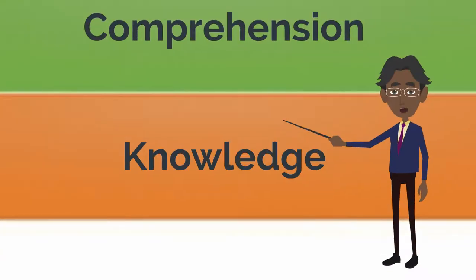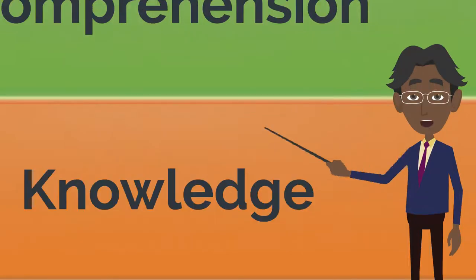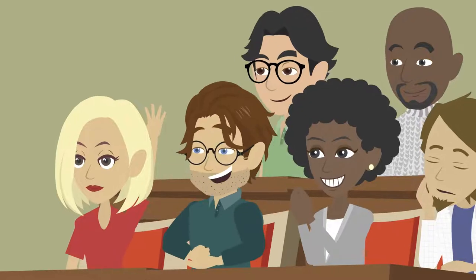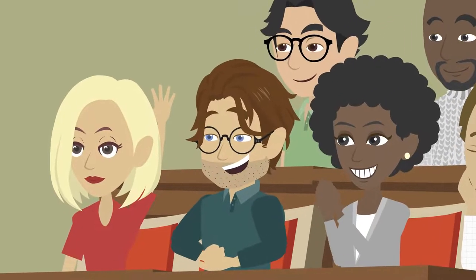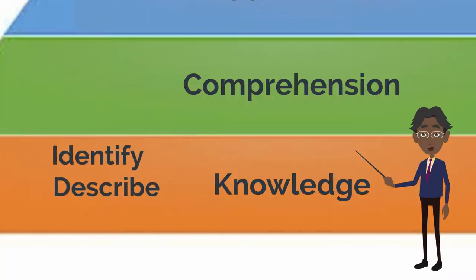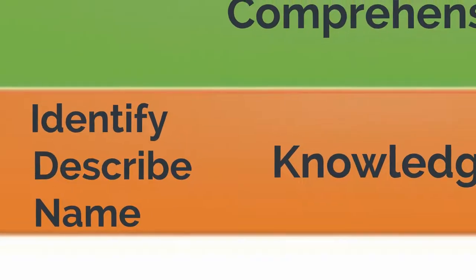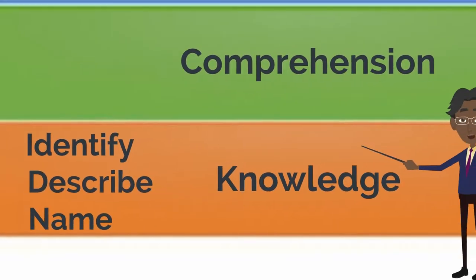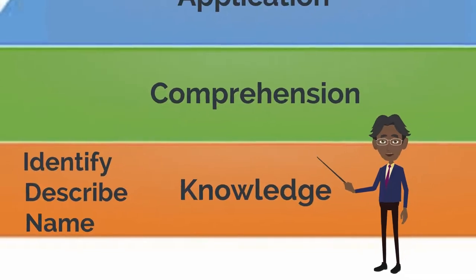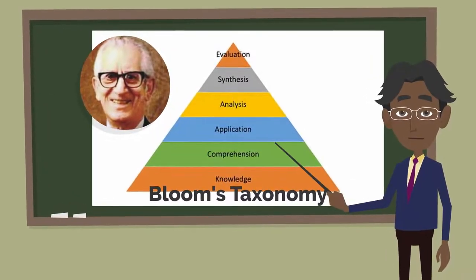At the base of this diagram is the knowledge level. This is the most basic level within the learning structure. At this level, students should be able to recall facts, terms, and basic concepts. Action verbs at this level include words such as identify, describe, name, etc. As you can see, these action verbs are almost synonymous with the definition of the knowledge learning level, and they should work that way at each level within the structure.